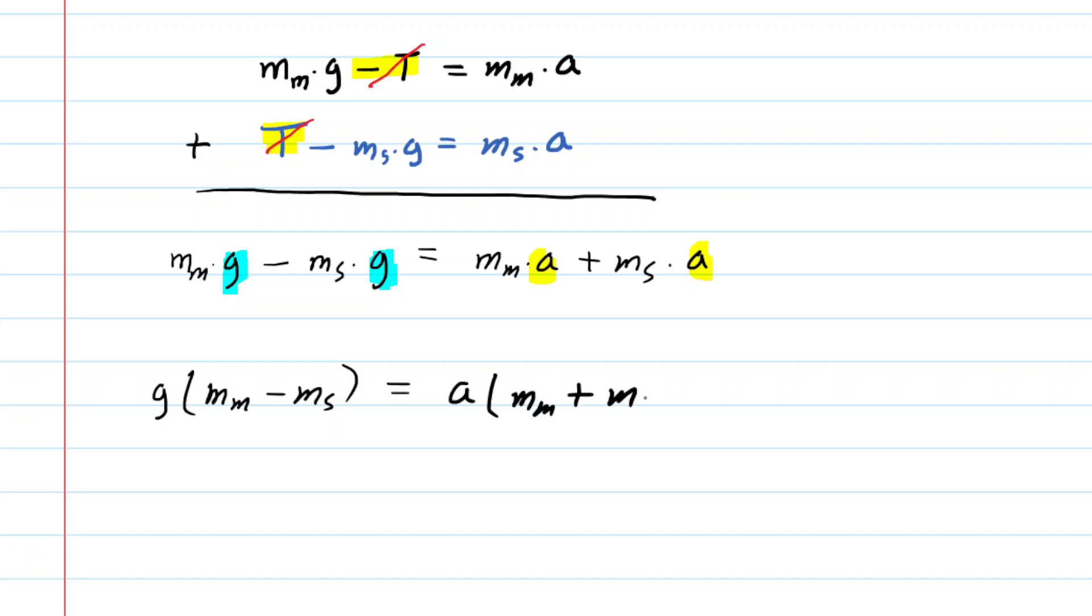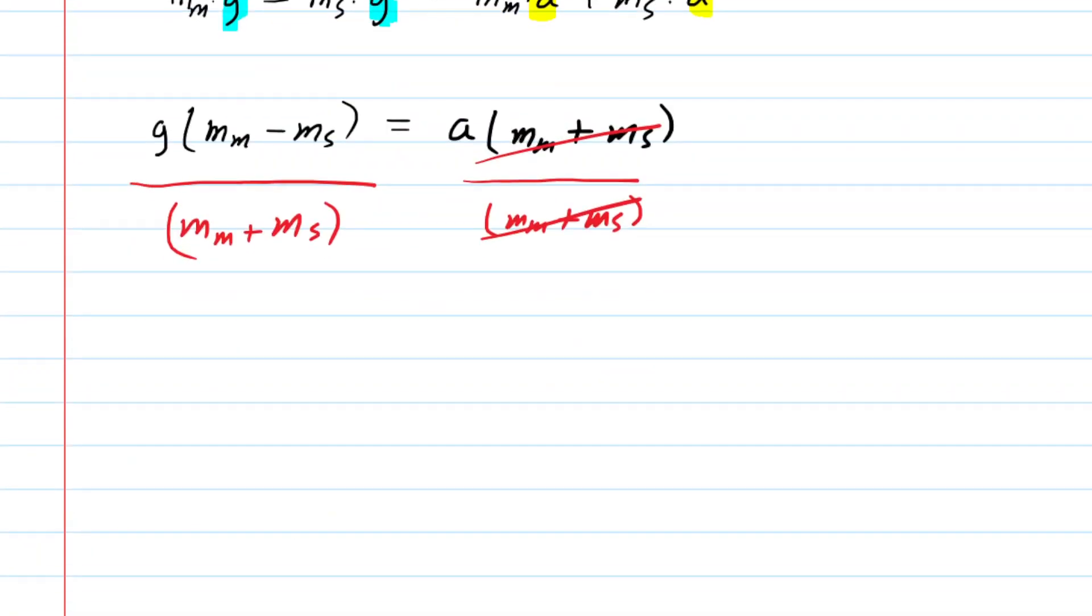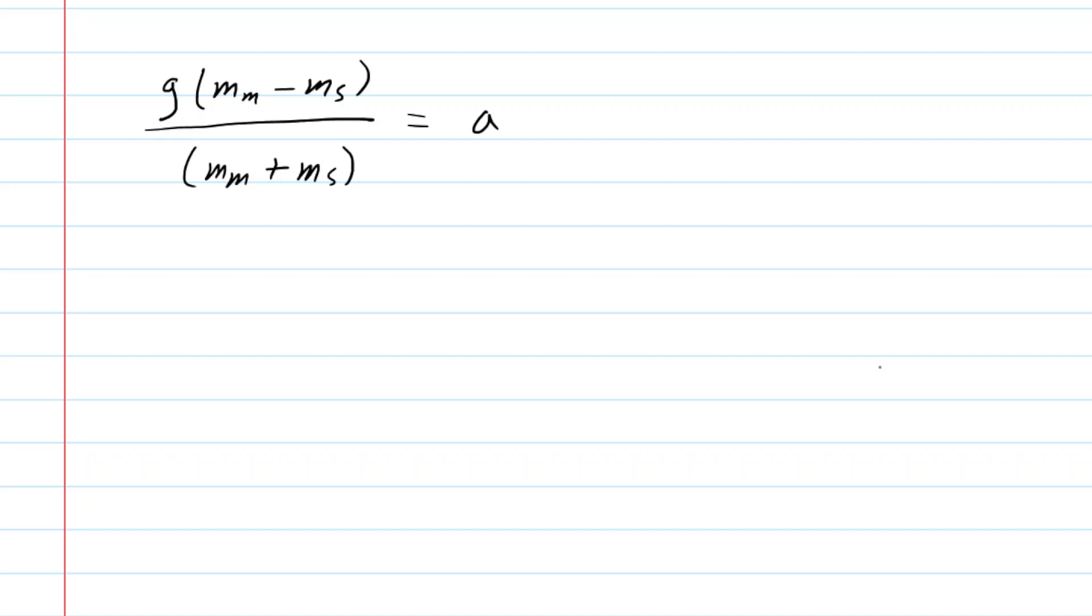Next, we're going to solve this for the acceleration. And of course, to do that, we can simply divide both sides by the mass of the man plus the mass of the sandbag. Doing so cancels that term out on the right-hand side. And now we have the following expression. Now this expression is very useful to us because it's going to allow us to calculate the acceleration of the man as he descends downward.